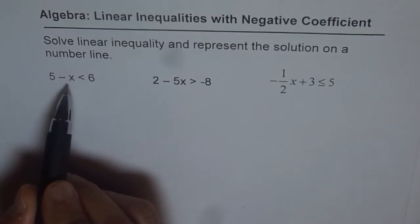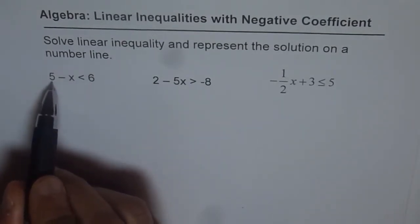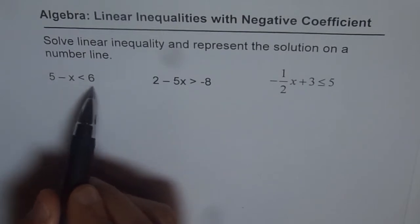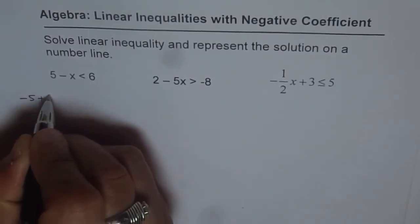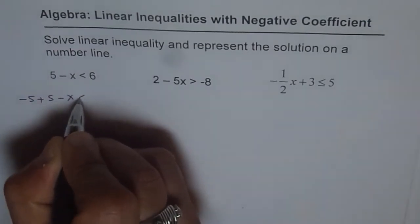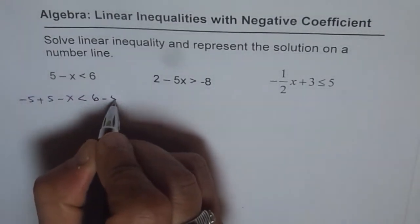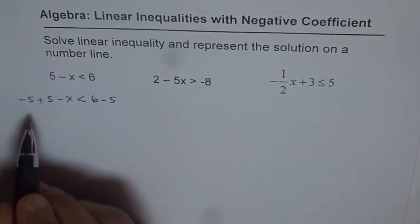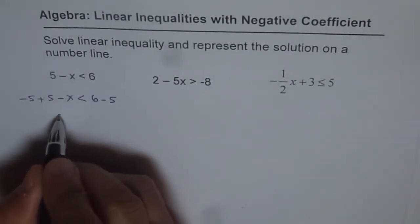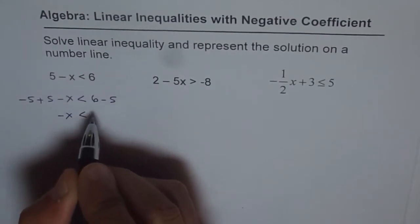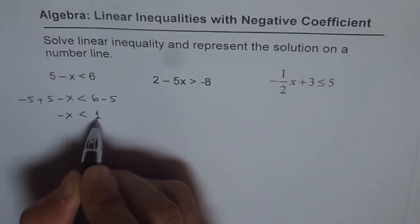5 minus x less than 6. To isolate x, we need to get rid of 5. So let's take away 5 from both sides. So we get minus 5 plus 5 minus x less than 6 minus 5. So we have taken away 5 from both sides. That leaves us with minus x is less than 6 minus 5, which is 1.